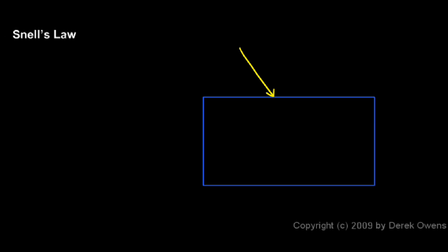Snell figured this out empirically, and that means he did it by observing the data, by taking measurements, by looking at what happened when light rays went into different materials and measuring the angles.